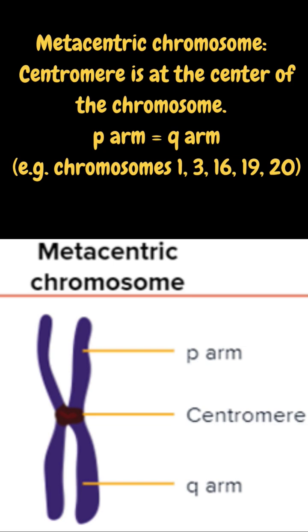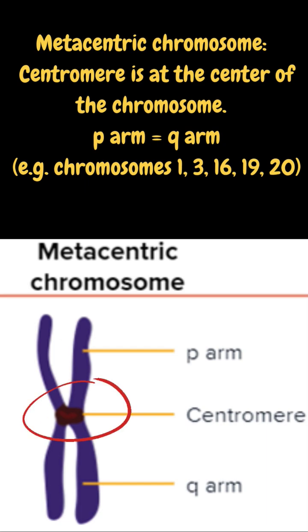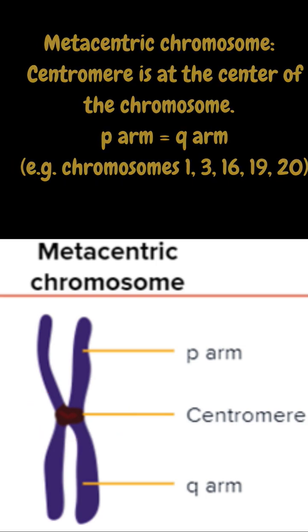First is Metacentric, in which the Centromere is present in the center of the chromosome. The P arm is equal to the Q arm.